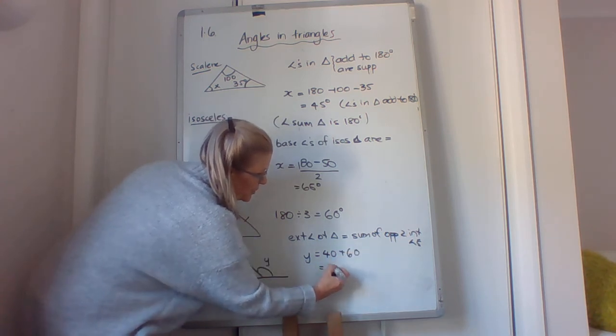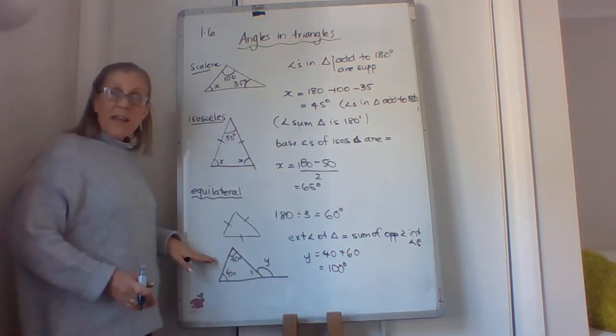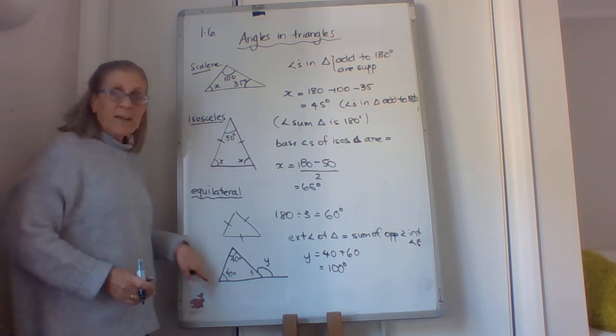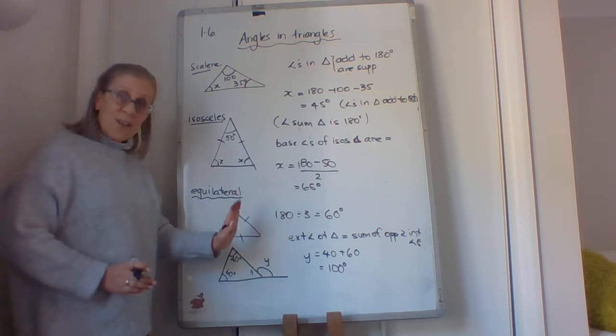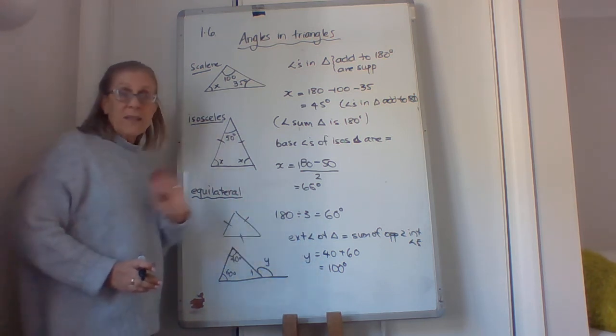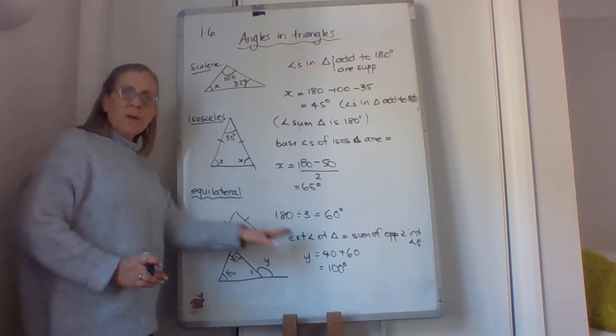So you can do that by two steps. You can find the angle sum and use angle sum of a triangle, and then angles on a straight line. That is okay. You don't have to remember this one, but if you do you can do it in one step.